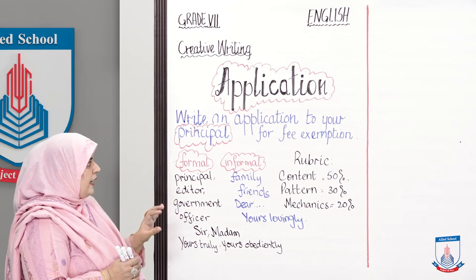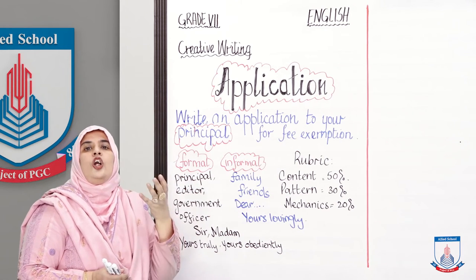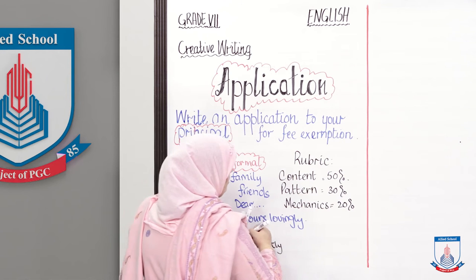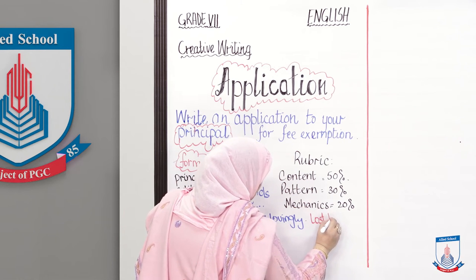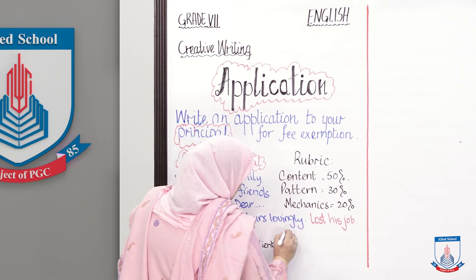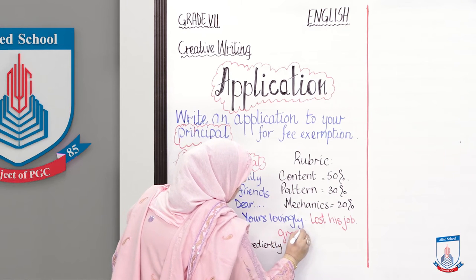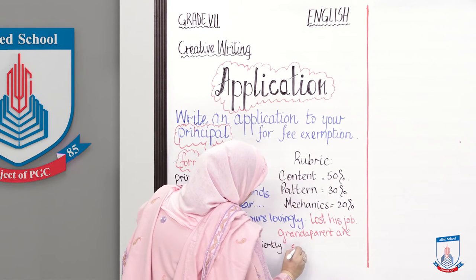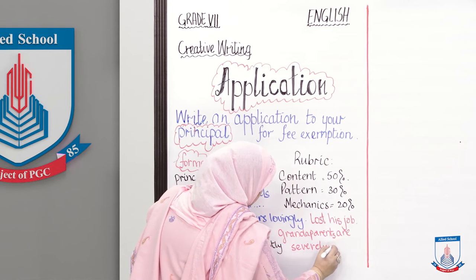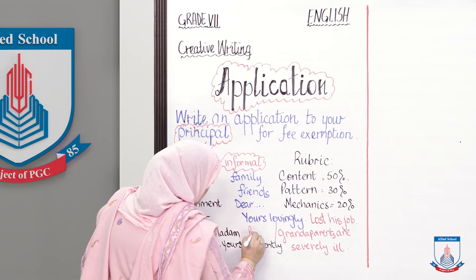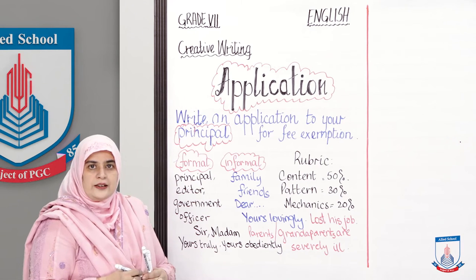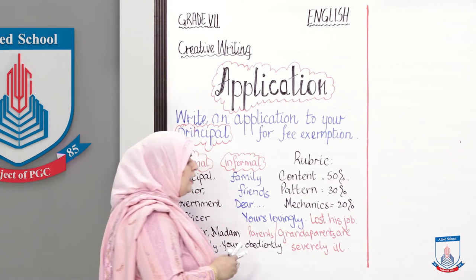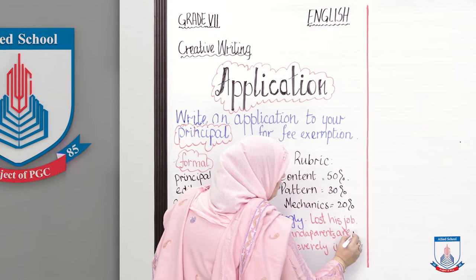Now we need to identify what logic or reason we will give for fee exemption. We can say the father lost his job — for example, our father has lost his job due to corona, or due to something else such as parents or grandparents being severely ill. However, let's stick to the reason of losing the job. We will write about the losing of the job.